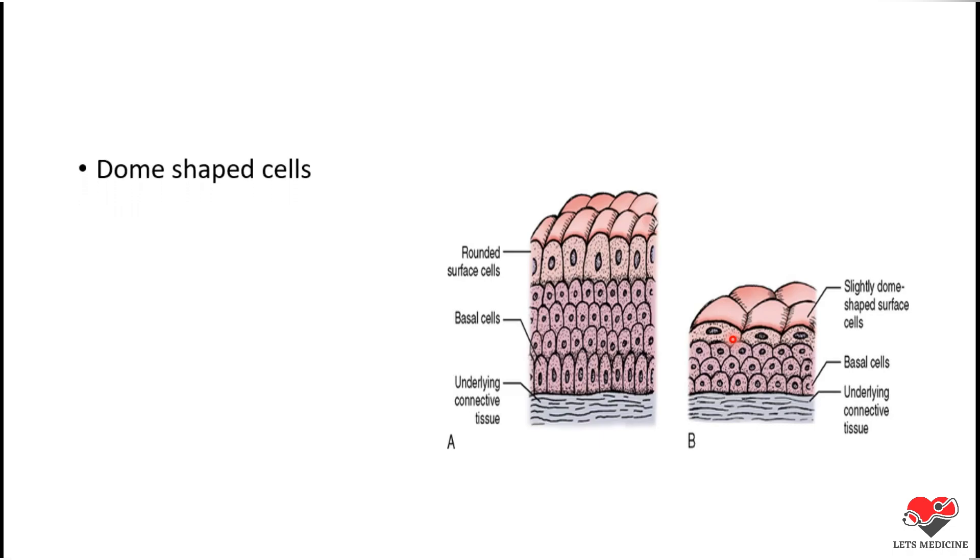So what are the dome-shaped cells? An important identifying point of Transitional Epithelium is the dome-shaped cells. These are the cells which are present in the topmost layer of Transitional Epithelium. Under relaxed state of function, these cells appear like a dome. Also, they are sometimes termed as umbrella cells.